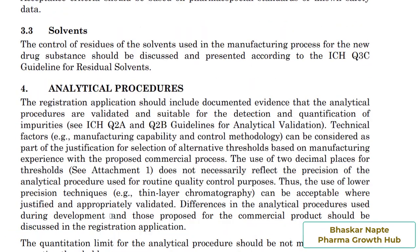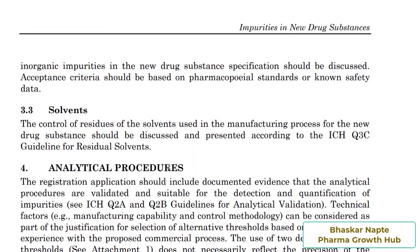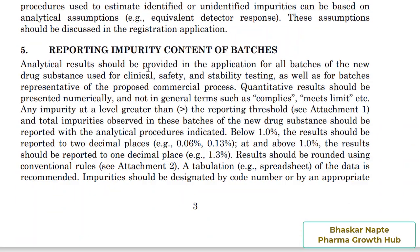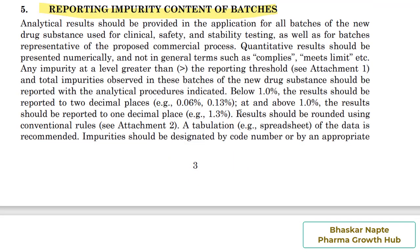We are now on page number seven, which talks about reporting impurities content of batches — point number five. I'd like to draw your attention to this sentence: below one percent, the result should be reported to two decimal places. Examples: 0.06% and 0.13%. You can see that all these values are below 1.0%.